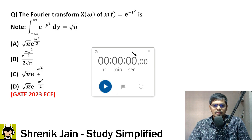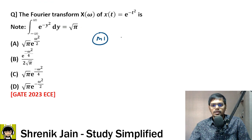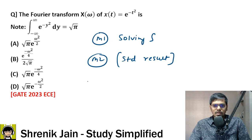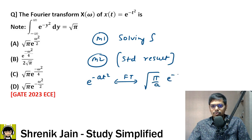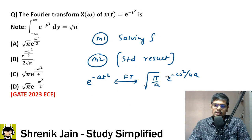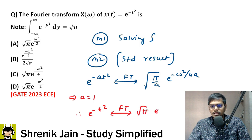Using the standard result: if x(t) = e^(−at²), then its Fourier transform is √(π/a) · e^(−ω²/4a). In the question, a = 1. Substituting a = 1, the Fourier transform of e^(−t²) is √π · e^(−ω²/4). This matches option C, so option C is absolutely correct.